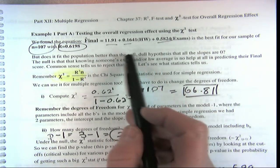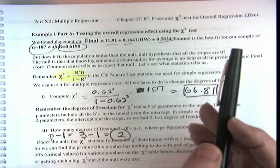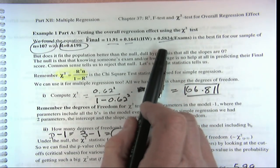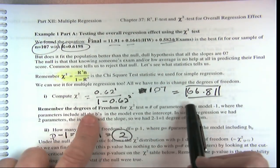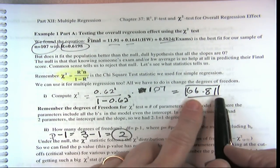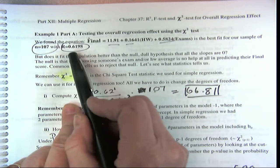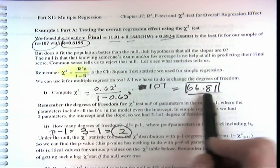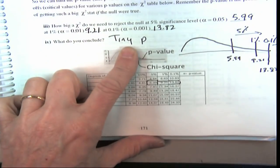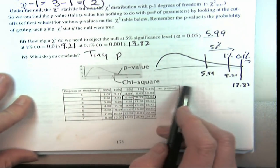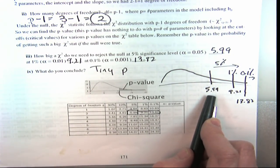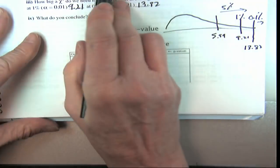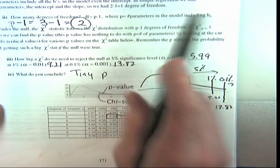But assume that it had nothing to do with it — that's what the null says. How likely would it be to get this big an R and this big a chi-square stat? We saw that we got a tiny, tiny p-value. All we needed was 5.99 to say that our random sample landed far away from what you'd expect. But we got 66.81, which is now landing so far away.